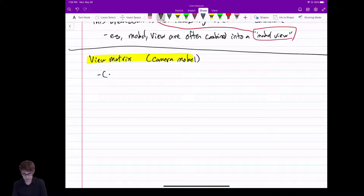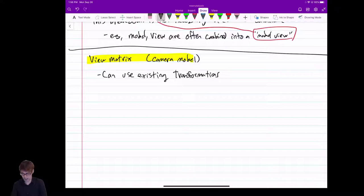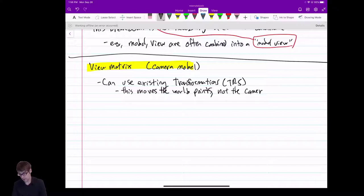So one way to do this is we can simply use our existing transformations, no big deal. So you can rotate, you can scale, you can translate and apply that to this matrix and it'll move the world around based on those things. But some people find that a little hard to use. And I will highlight this point that I just said, that this does move the world points, not the camera.